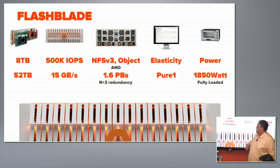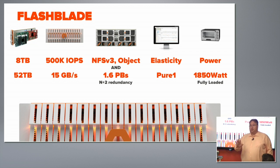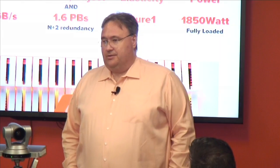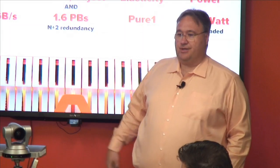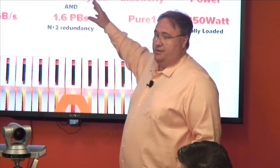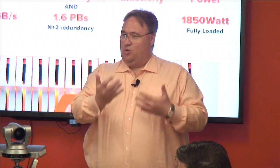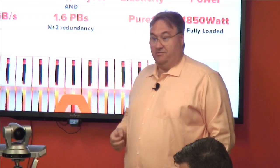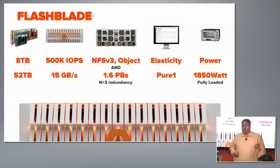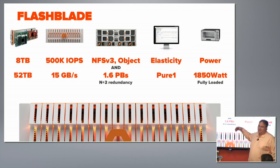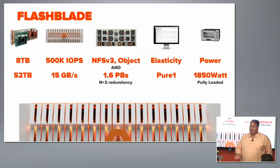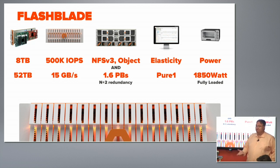In the 52 terabyte blade size, fully configured, we can fit about 1.6 petabytes usable. That assumes three-to-one data reduction. You may notice that some vendors — and even ourselves for FlashArray — generally claim a higher data reduction rate. In this world we don't see a whole lot of deduplication. When you work on time-series data sequences, there just isn't much duplication to exploit. What we do see is quite a bit of compressibility, so we reduce the data reduction rate claim. In the real world, it's about three to three-and-a-half to one with our early adopters. Of course, there are use cases where there's no data reduction at all — for those, divide by three to get to the raw number.